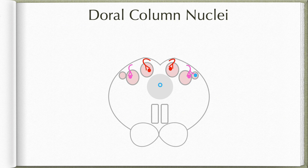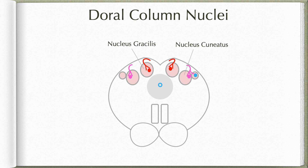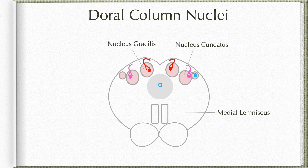Coming to the dorsal column pathway nuclei — this includes four nuclei on either side. The nucleus gracilis and nucleus cuneatus receive discriminative touch, pressure, vibration and conscious proprioception information from the ipsilateral half of the body. This information reaches them through primary afferents traveling in fasciculus gracilis and fasciculus cuneatus. These nuclei relay this information to the contralateral thalamus via the internal arcuate fibers and the medial lemniscus. We have already discussed this pathway in detail in the video on dorsal column pathway.